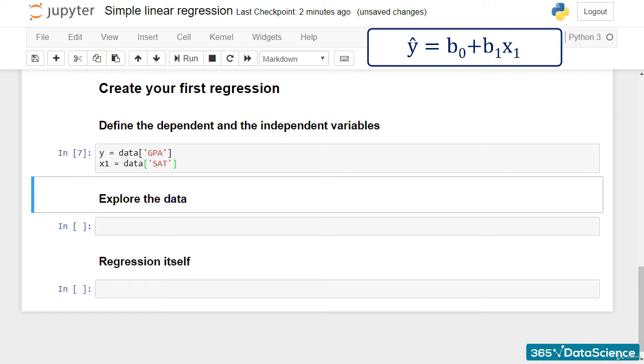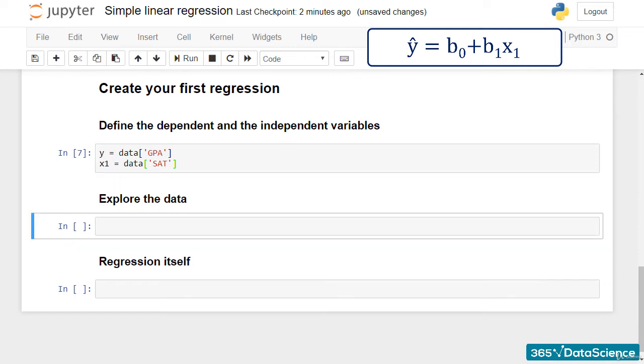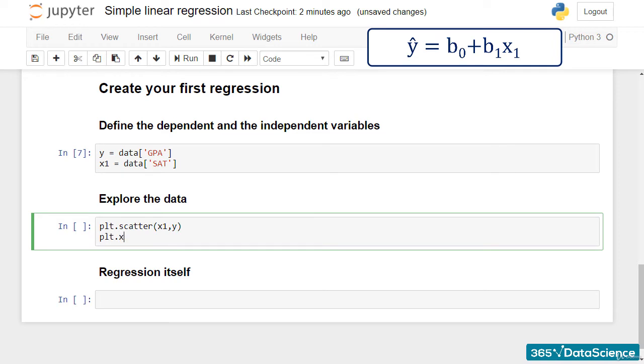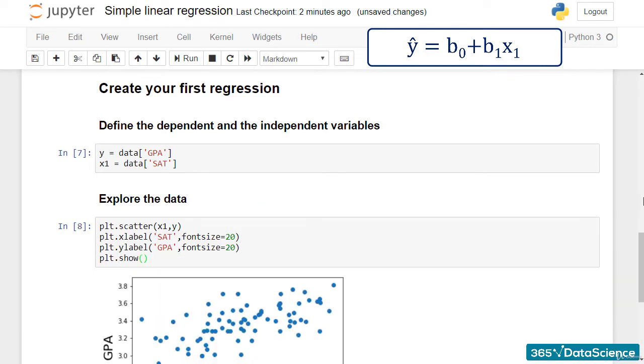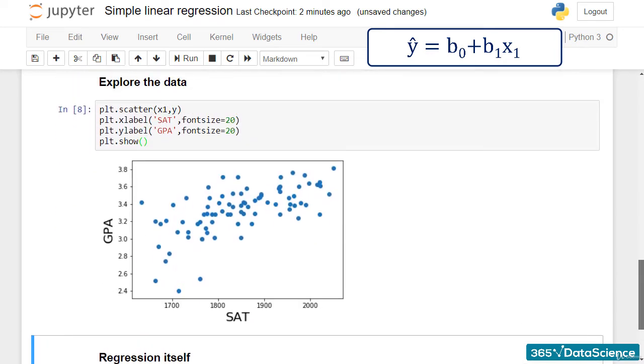It's always useful to plot your data in order to understand it better and see if there is a relationship to be found. I'll use some conventional matplotlib code. Each point on the graph represents a different student.